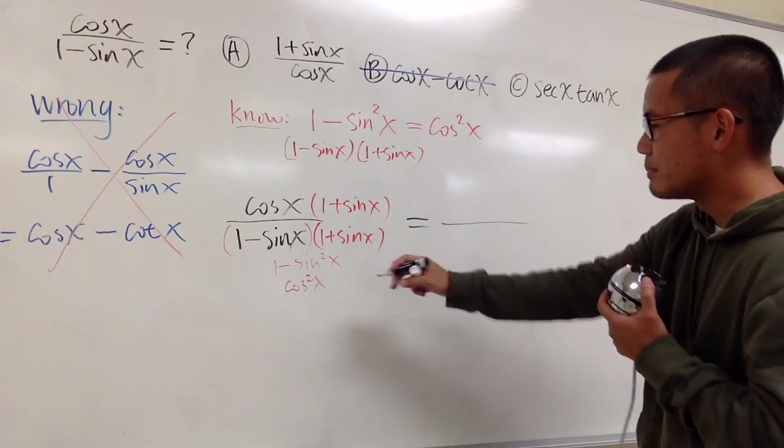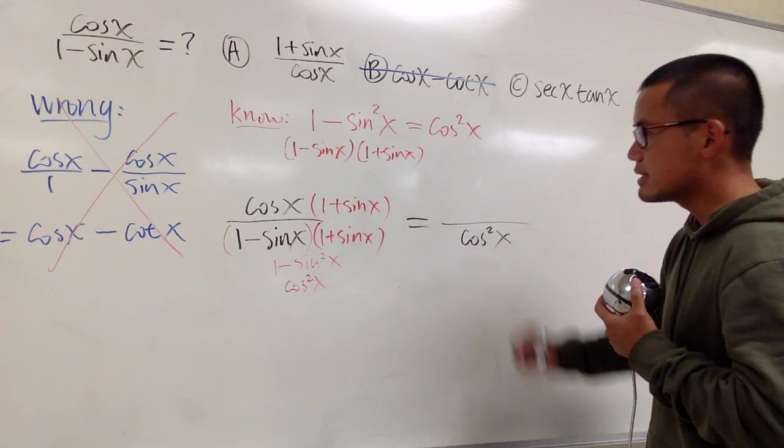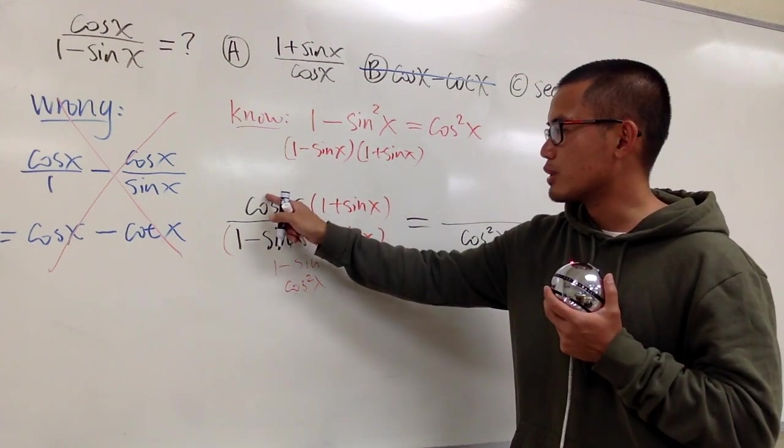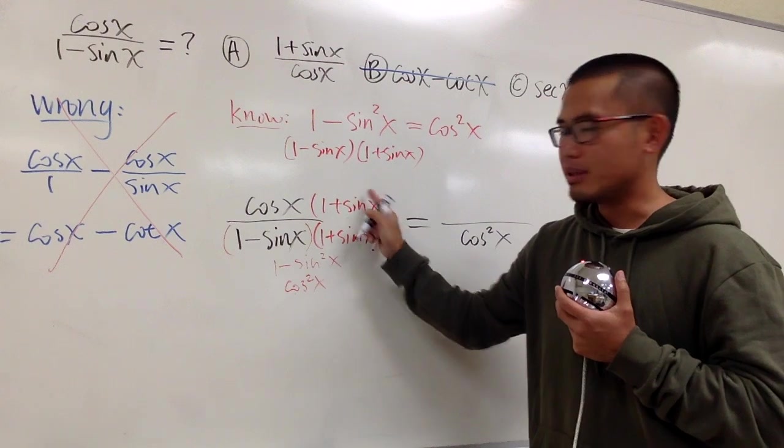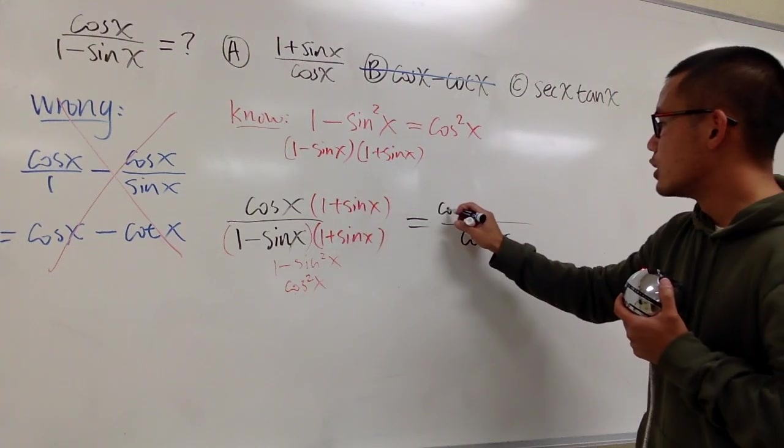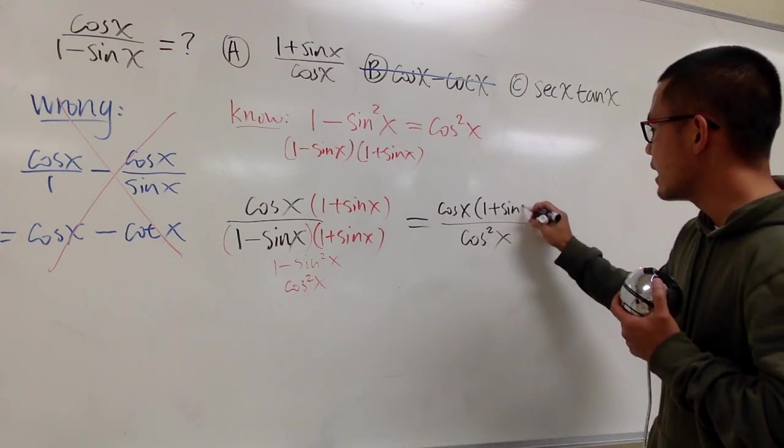Anyways, right here on the bottom, we just have cosine square x. And for the top, I am not going to distribute the cosine x into the parentheses, because I have cosine square on the bottom already. Let me just keep it as how it is. This is cosine x times 1 plus sine x.